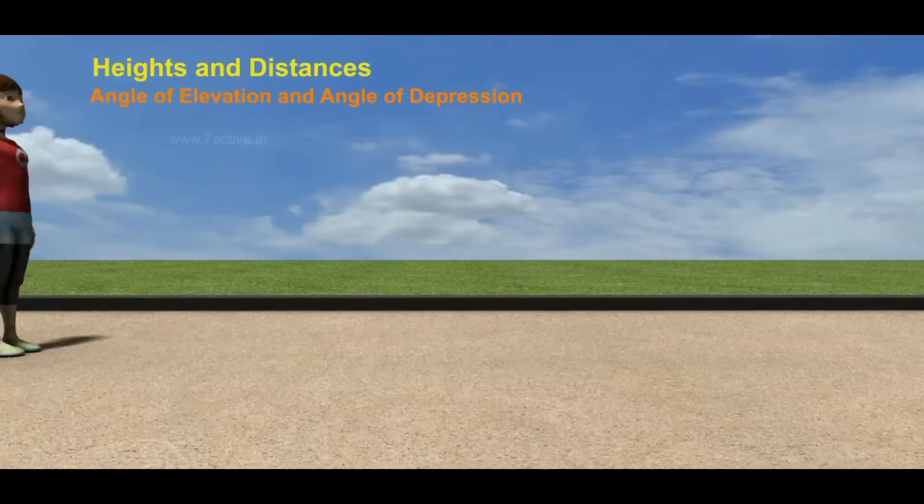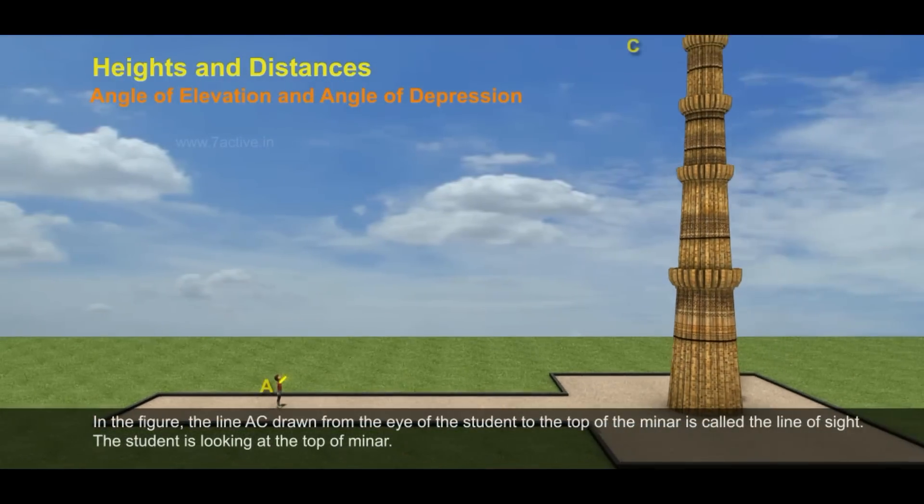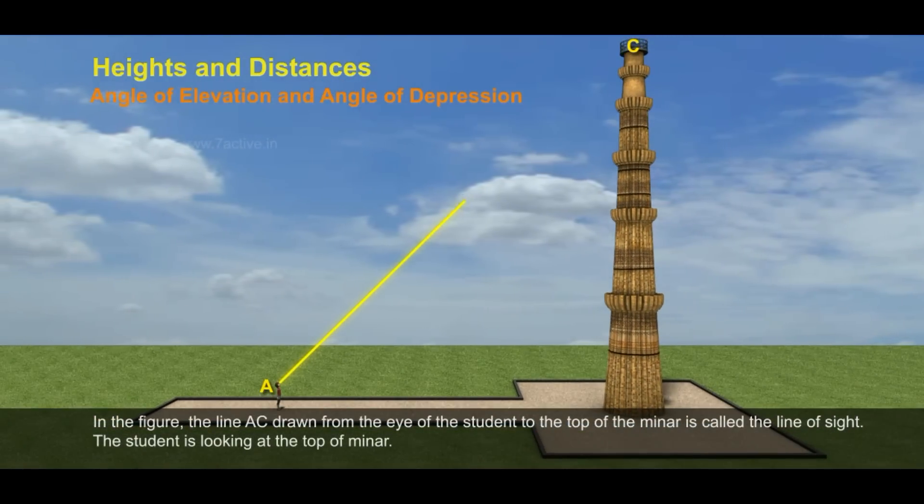Angle of elevation and angle of depression. In the figure, the line AC drawn from the eye of the student to the top of the minar is called the line of sight.